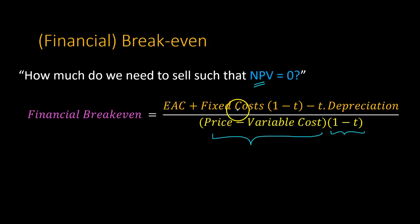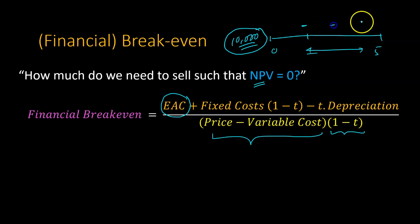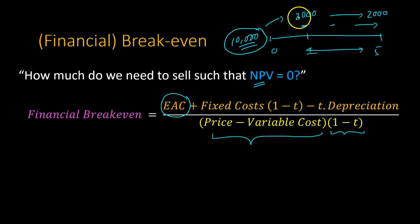In the numerator, instead of just fixed costs, you have EAC — equivalent annual cost. If you're spending $10,000 upfront today and using that machinery over five years, EAC converts that lump sum into a constant annual amount accounting for time value of money. It's similar to depreciation but not quite: depreciation divides $10,000 into $2,000 per year under straight-line, which adds up to $10,000 over five years but doesn't account for time value of money. EAC recognizes that time value.